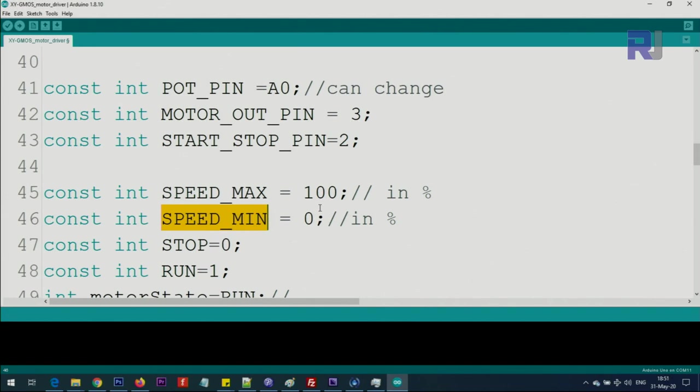Speed maximum and speed minimum are the two values for the motor. In some applications you don't want the motor to go to 100 percent. This is in terms of percent: zero means stop, hundred means maximum speed in terms of percent. You can set the minimum and maximum for your motor so the motor cannot go above that value.